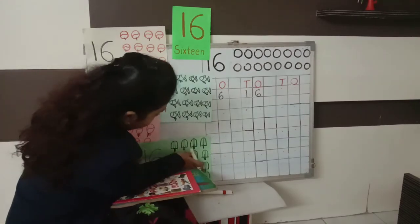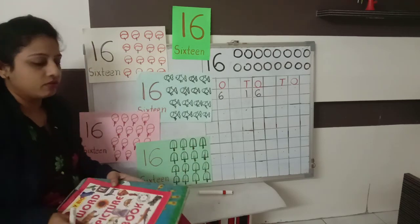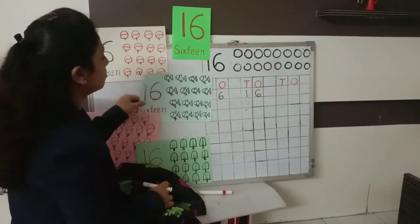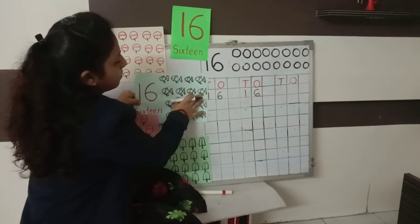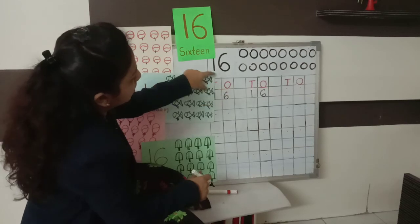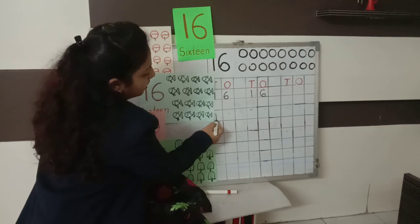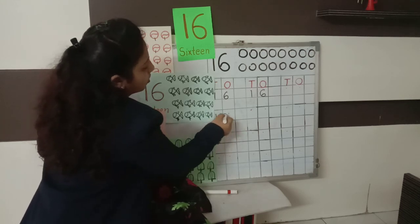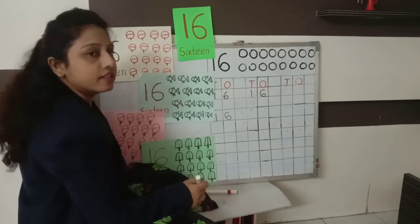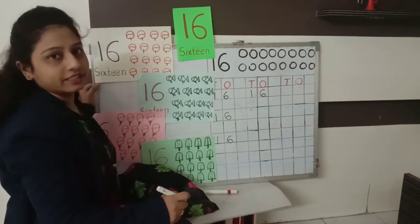So today we had learned how to count number 16. Now I am going to show you how to write number 16. First law for T and O — T for tens and O for ones. So we have to write 1 in the T box, and 6 in the O box. 1-6, 16.